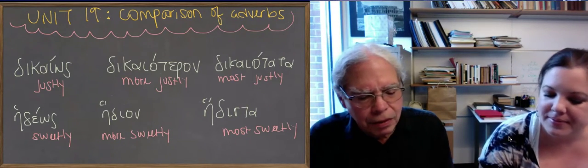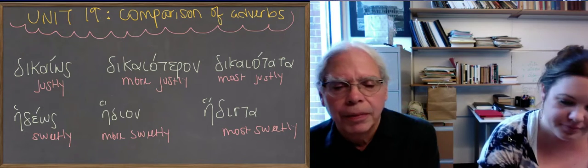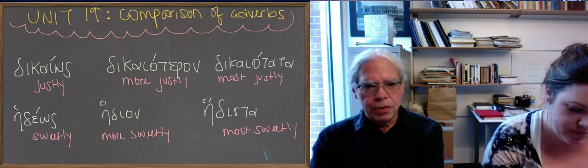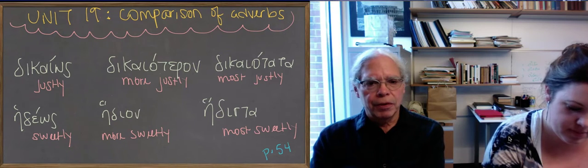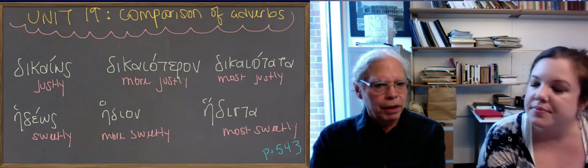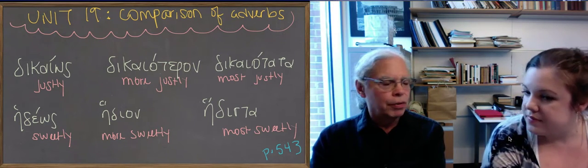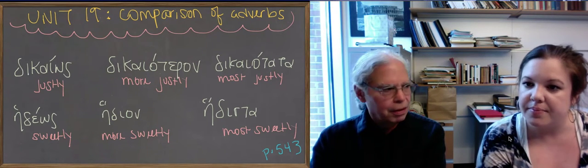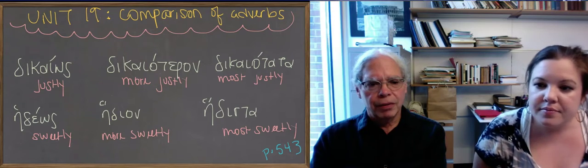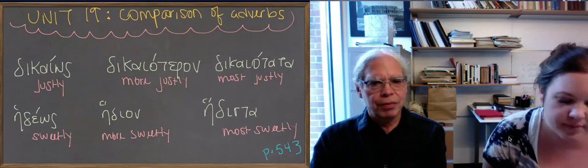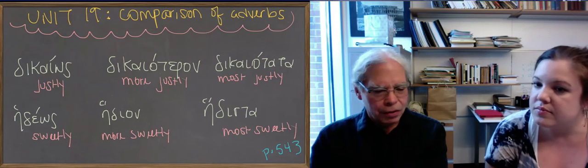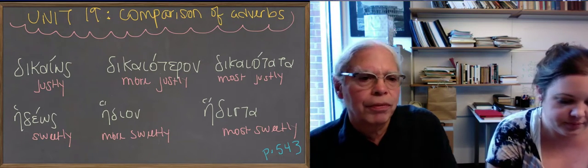So we're talking about unit 19. The first thing in unit 19 is comparison of adverbs. So we're going to talk about that first and then we're going to talk about irregular comparison of adjectives. So we did comparison of adjectives way back in unit 17 and they left out the most common adjectives which are also less regular in their formation. So we're going to talk about those two phenomena.